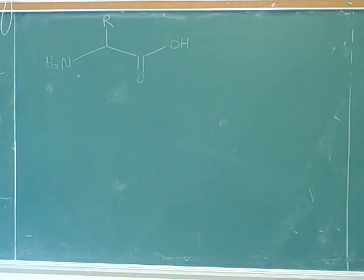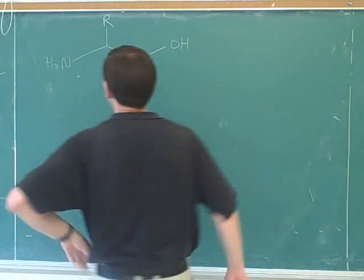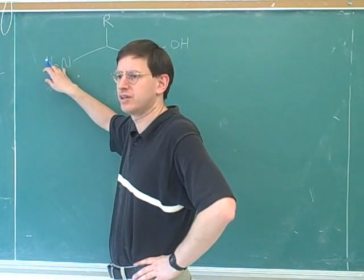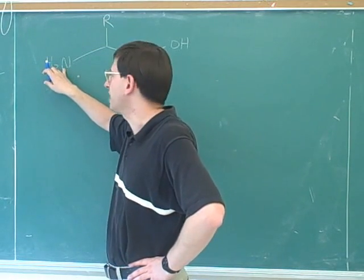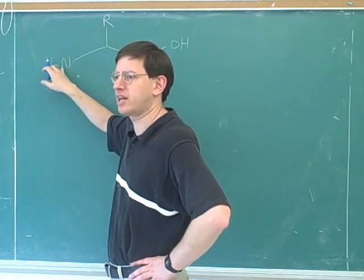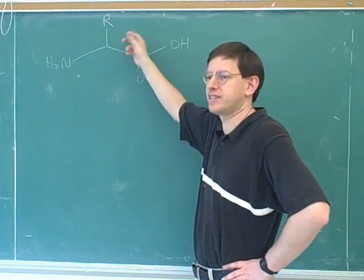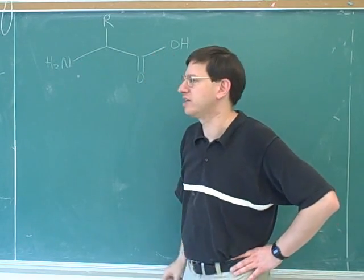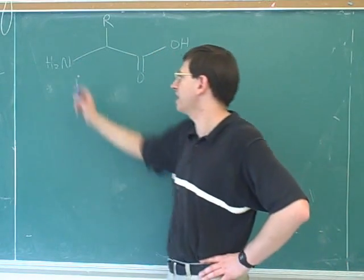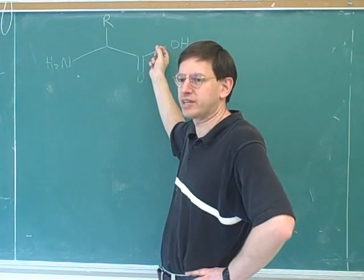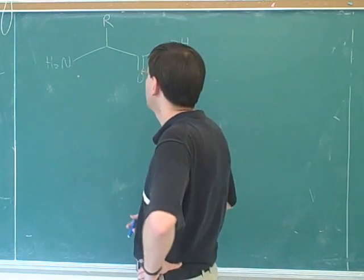This is the general form of an amino acid. Here's our general form for an amino acid. What type of functional group is this? That's why it's called an amino acid because it has an amine group. And what type of functional group is this? Carboxylic acid. That's why it's called an amino acid because it has an acid group as well. So the name amino acid is very logical. There's an amine group and a carboxylic acid group.